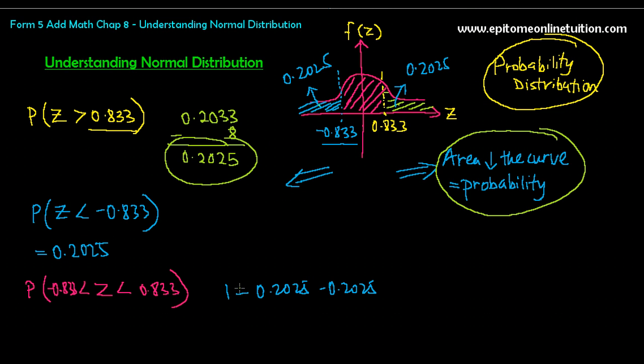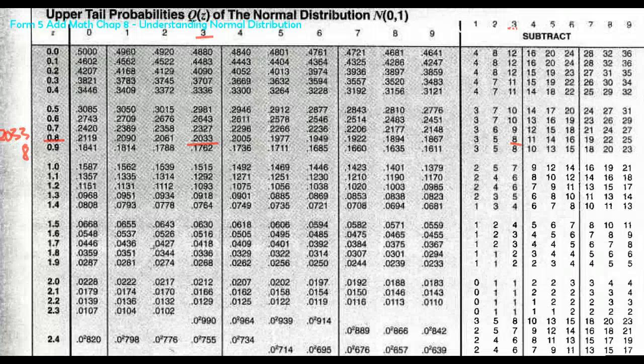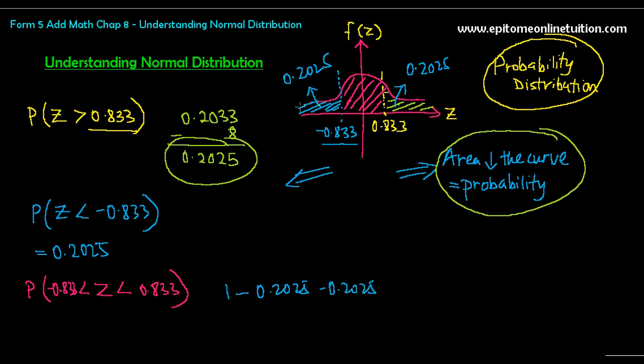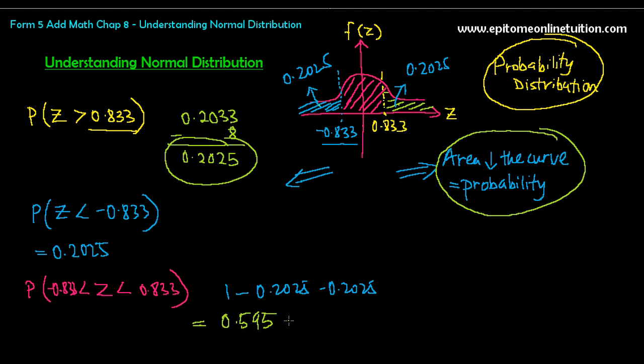So that means the entire area of the curve under the curve is 1. A portion of it here is 0.2025. The other portion is here. So if I want to find the one that is in the middle, this is like looking for area. Just use 1 minus this area, minus this area, and you get the one that is in the middle. In order to find the area or the probability that is in the middle, you will always have to minus. Because whatever that you read from the table is always the outside part. If you want to find the inside, you have to minus it. So in this case, you will get the answer 0.595. This is the probability for the one inside here.